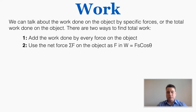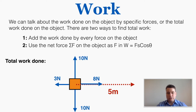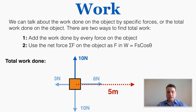Let's say we want to find the work done by every individual force on this object, and then find the total work, as this box is moved 5 meters to the right. Starting with the 10 Newton force: because it is perfectly perpendicular to the displacement, the total work done is 0, since the angle is 90 degrees and cosine of 90 degrees is 0.